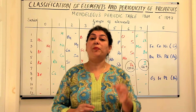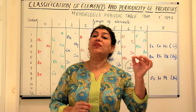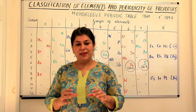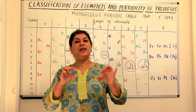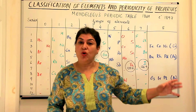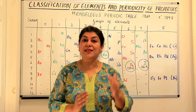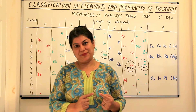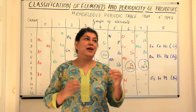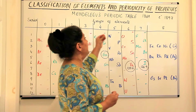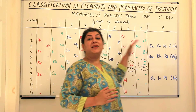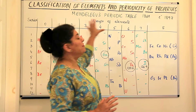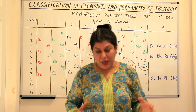He said that the properties of elements are a periodic function of their atomic masses — meaning that if you arrange the elements according to their increasing atomic masses, the periodicity is related to this increase in mass. In the year 1869, Mendeleev gave his periodic table, known as the Mendeleev's periodic table.